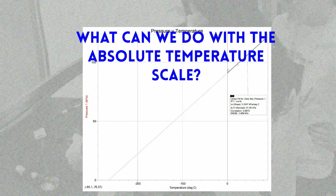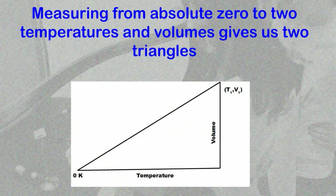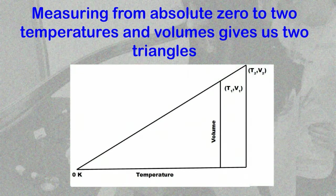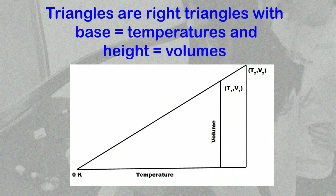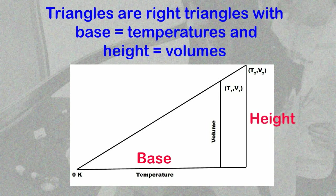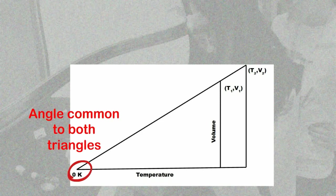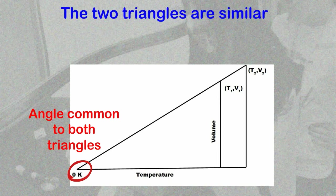As you see, if we measure from absolute zero to two temperatures and volumes, we can draw two triangles. The triangles are right triangles with the base equal to the temperatures and the height equal to the volumes. And since they have a common angle at zero Kelvin, they are similar triangles.